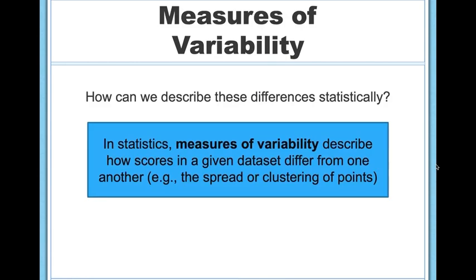So in general, in statistics, measures of variability are ways to describe these differences statistically. They describe how scores in a given data set differ from one another, and they capture things like how spread out or how clustered together the points are, things we've been looking at already.